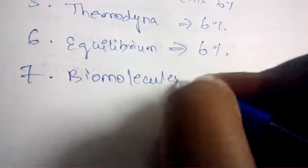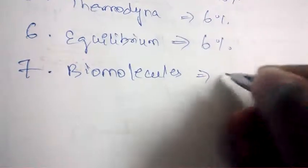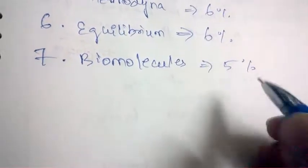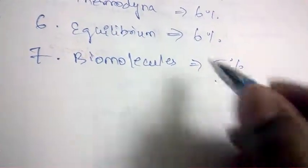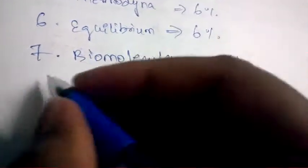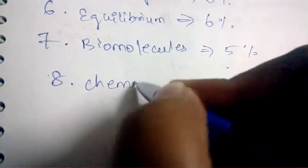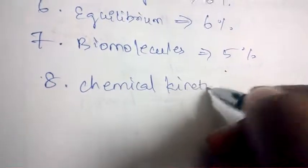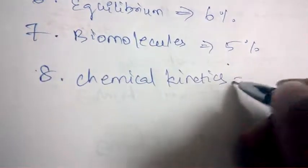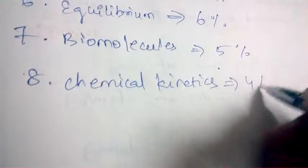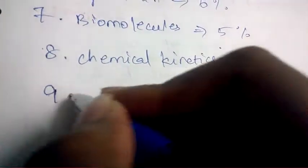Next is biomolecules — from the biomolecules chapter, 5% of questions will be asked. And next, chemical kinetics — from chemical kinetics, 4% of questions will be asked.